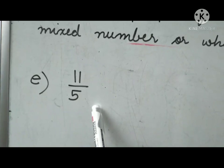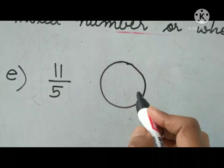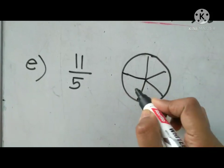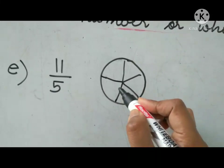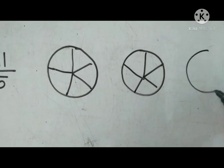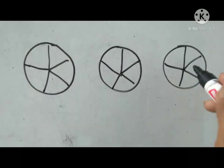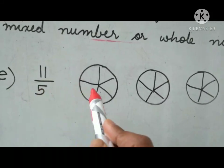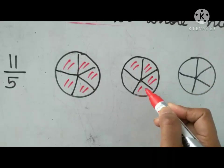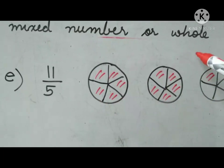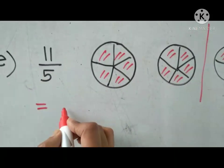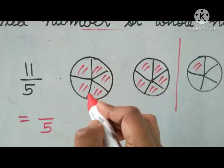11 over 5. Draw a diagram and divide it into 5 equal parts. We need to shade 11 parts — but 5 is only 5, so draw one more circle divided into 5 equal parts. That gives 10, so we need to draw one more figure divided into 5 equal parts. Now shade 11 parts: 1, 2, 3, 4, 5, 6, 7, 8, 9, 10, and 11. These two circles are whole figures, so draw a line here. The whole figure part has denominator 5, with 5 and 5 parts shaded — that's 10.